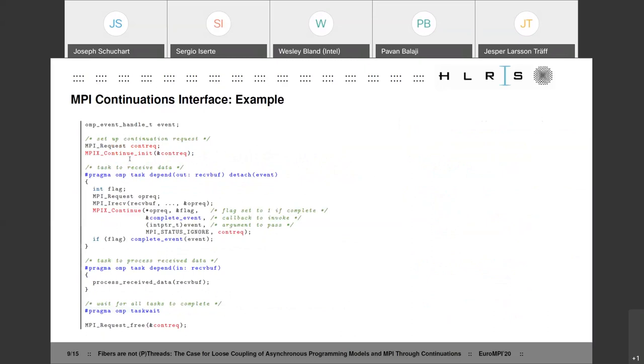To show you an example how that interface can be used: here we initialize a continuation request and then we create two OpenMP tasks. They have a dependency on this receive buffer and the first task is detached. Then the first task starts the receive operation and registers a continuation. What I didn't mention earlier was that MPI_Continue takes a flag argument and that flag signals whether the operation was found to be complete at the time of the registration. If that is the case, the implementation won't invoke the continuation directly, but instead it will leave it to the application to do that. And the continuation in this case looks fairly simple. All we have to do is tell the OpenMP library that the event has completed and this dependency can be released so that that task can be executed.